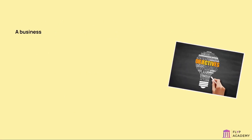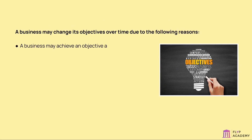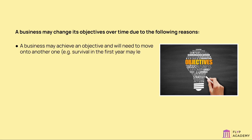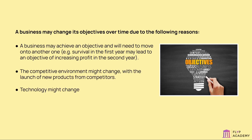A business may change its objectives over time for several reasons. A business may achieve an objective and will need to move on to another one — for example, survival in the first year may lead to an objective of increasing profit in the second year. The competitive environment might change with the launch of new products from competitors. Technology might also change product designs, so sales and production targets might need to change.